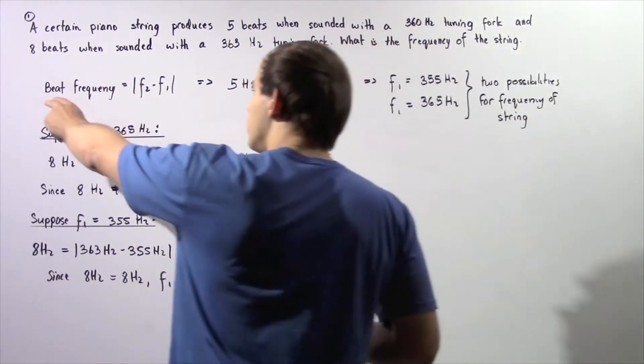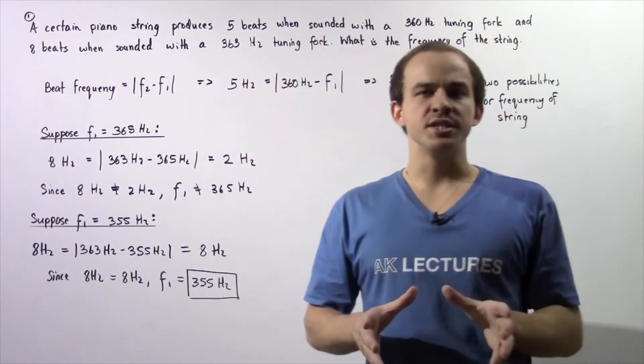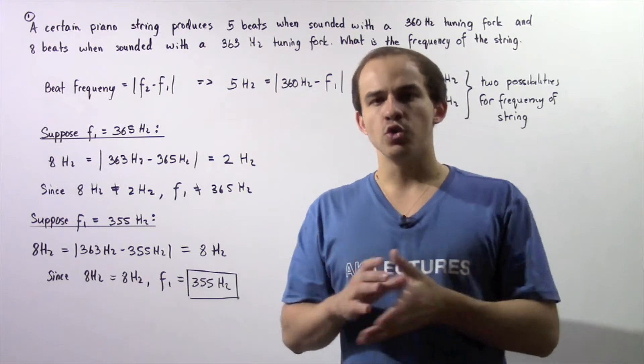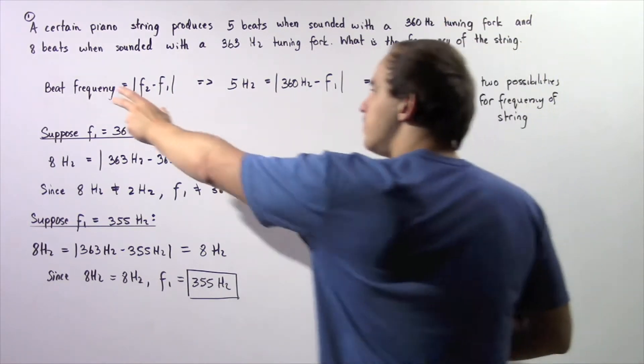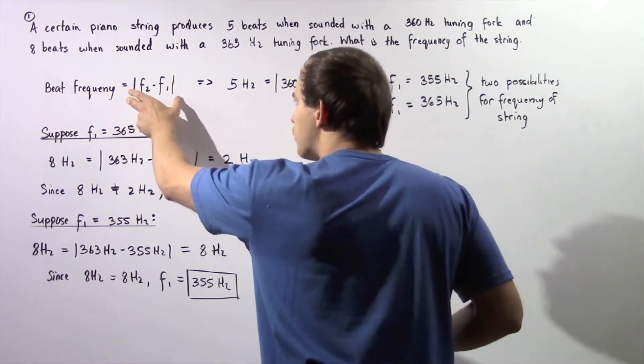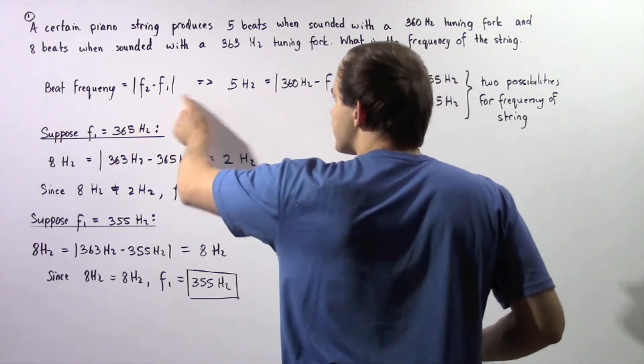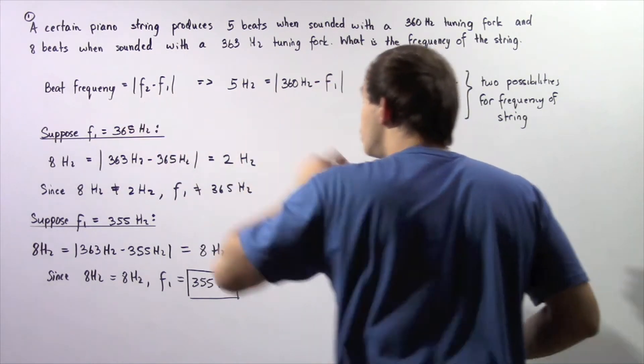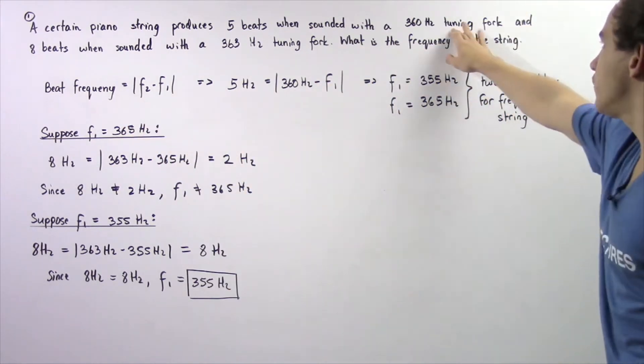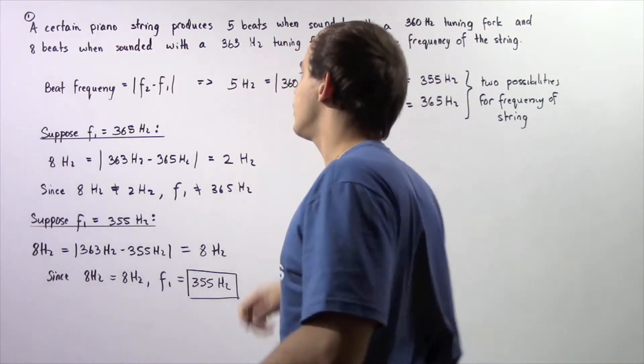Well, let's begin by recalling the equation, the formula that gives us the beat frequency between any two waves. So the beat frequency between two waves is equal to the absolute value of the difference between the frequencies. So F2 minus F1, where F2 is the frequency of the tuning fork and F1 is the frequency of the piano string.